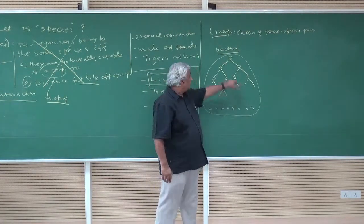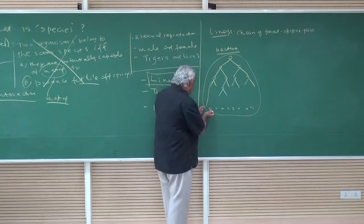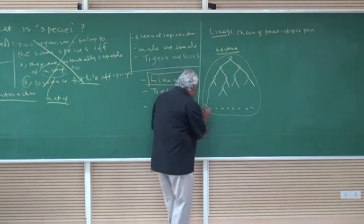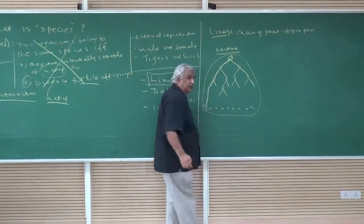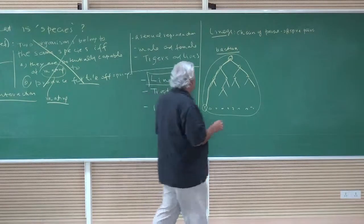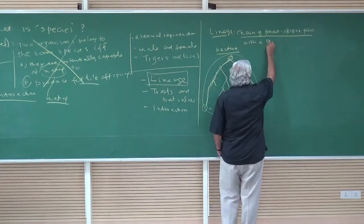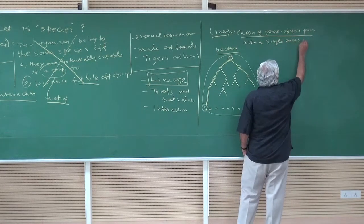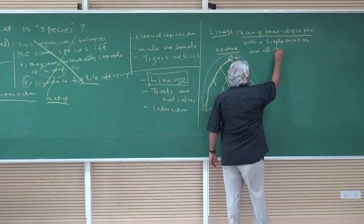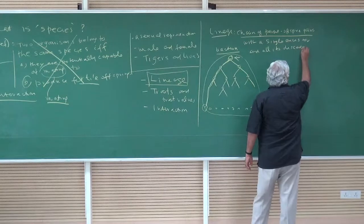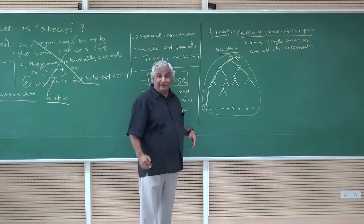All these bacteria belong to a single lineage. So what we need to say is: a lineage has a single ancestor and all its descendants. That's fine for asexual reproduction, but the situation in sexual reproduction is somewhat different. Let's take humans for example: you have a male and a female reproducing and then you have several offspring, and another male-female pair with several offspring, and some of those offspring may pair with others to create further offspring.